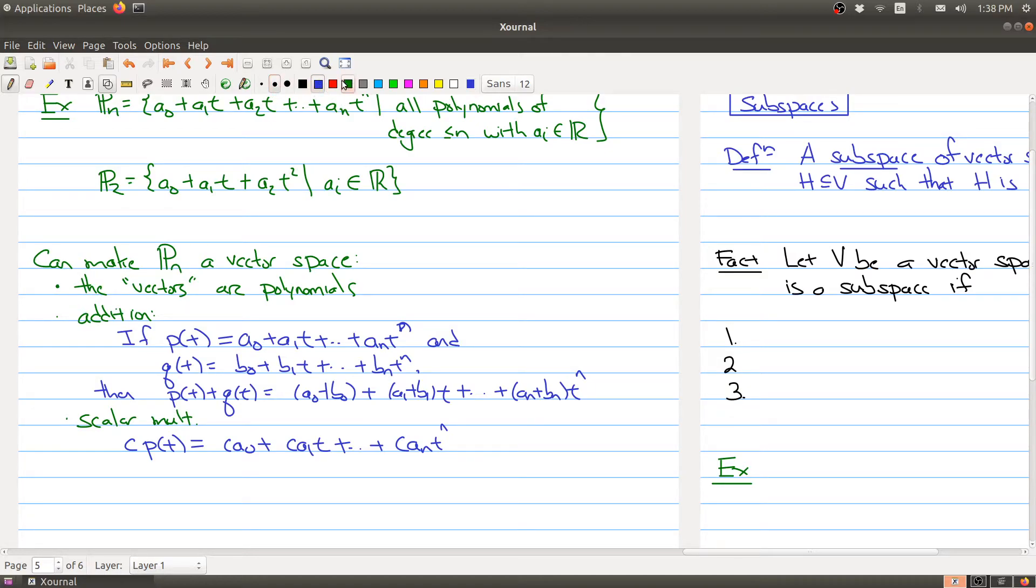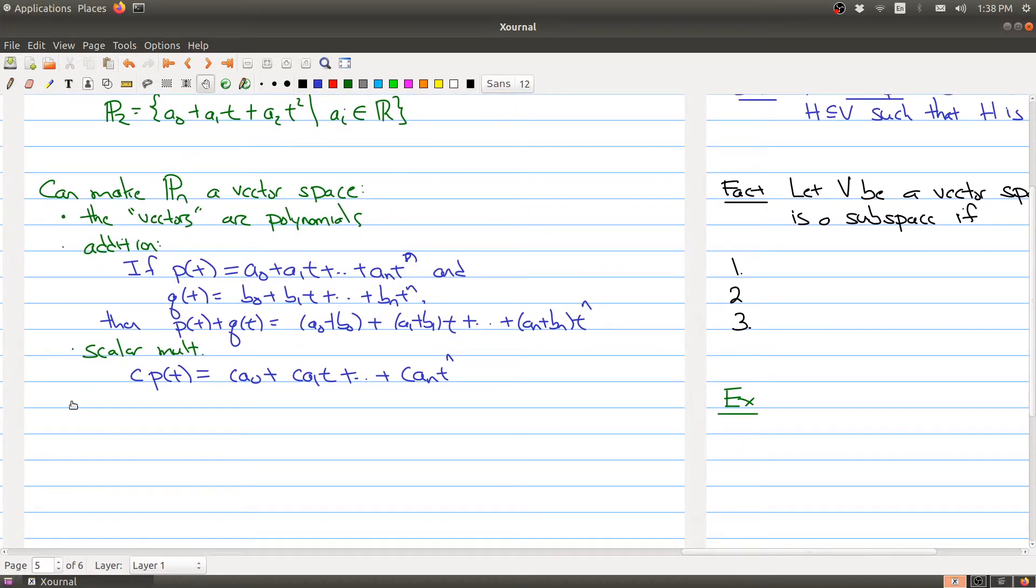Now you should also, we won't do it right here, but of course you really need to check that this is a vector space by checking all the 10 axioms. So you need to check the 10 axioms really to verify that this is a vector space. Luckily, the textbook does this. So I'll just defer to the textbook.